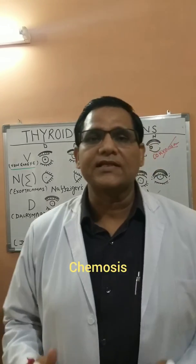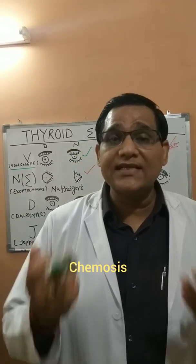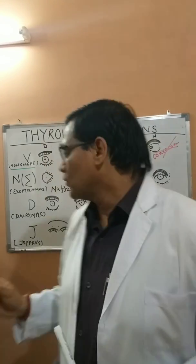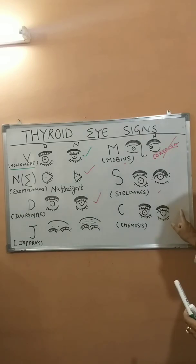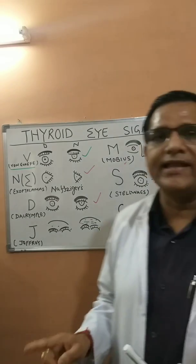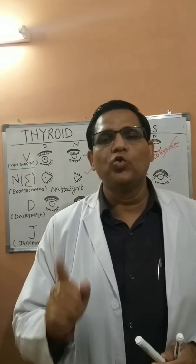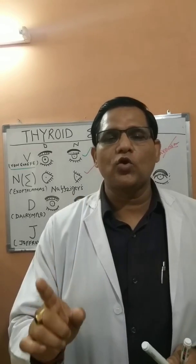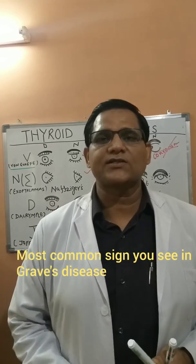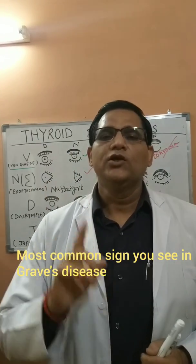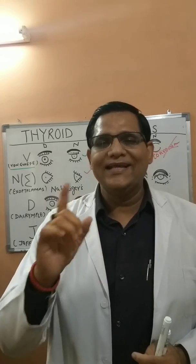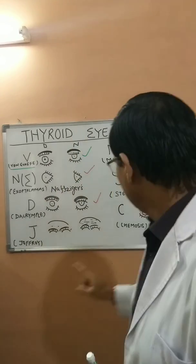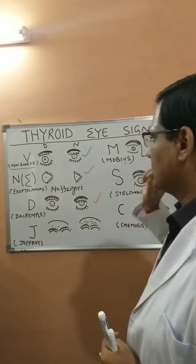One more sign is the presence of chemosis. Chemosis is a reddening over the sclera. Chemosis is the most common sign found in thyroid toxicosis and Graves' disease. So if somebody asks you what is the commonest sign in a patient of thyroid toxicosis or Graves' disease, you say it is chemosis.